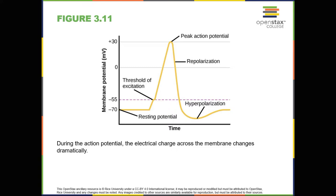The positive spike constitutes the action potential, the electrical signal that typically moves from the cell body down the axon to the axon terminals. The electrical signal moves down the axon like a wave. At each point, some of the sodium ions that enter the cell diffuse to the next section of the axon, raising the charge past the threshold of excitation and triggering a new influx of sodium ions. The action potential moves all the way down the axon to the terminal buttons. The action potential is an all-or-nothing phenomenon — an incoming signal from another neuron is either sufficient or insufficient to reach the threshold of excitation. There is no in-between, and there is no turning off an action potential once it starts.